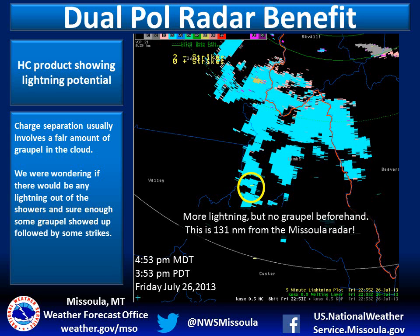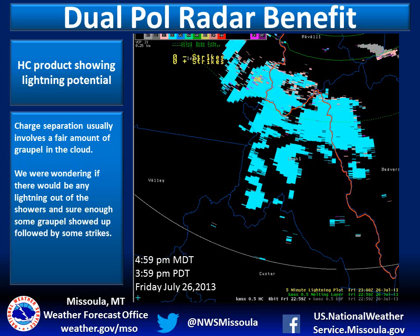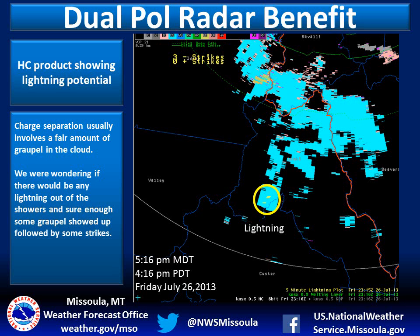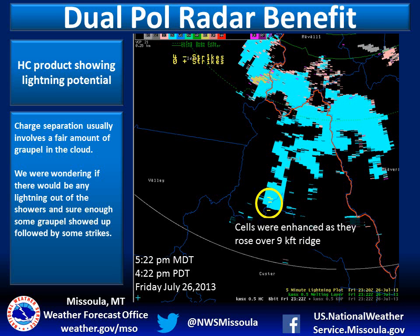More lightning with no graupel beforehand. This is pretty far away from the radar, and as the radar beam goes farther away, it widens with distance, giving less resolution — so potentially it could be missing some of the graupel. No graupel at 4:59, but we have more lightning; we know this cell probably has some graupel in it. More lightning and graupel at 5:10 p.m. and 5:16 p.m. — about three lightning strikes. Around 5:22, four strikes reported. This cell moved over a 9,000-foot ridge, which enhanced the cell and allowed it to develop more graupel, so more charge separation and more lightning. The cell was also closer to the ground, which probably aided the lightning.